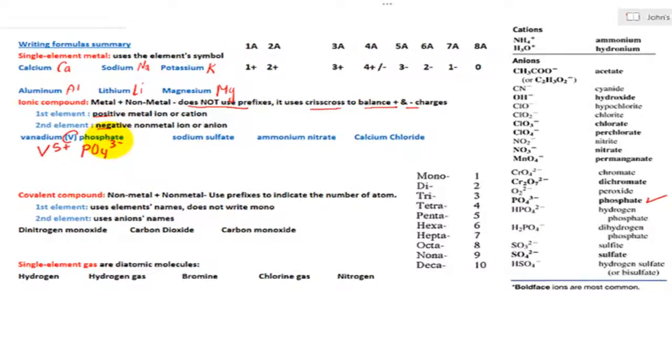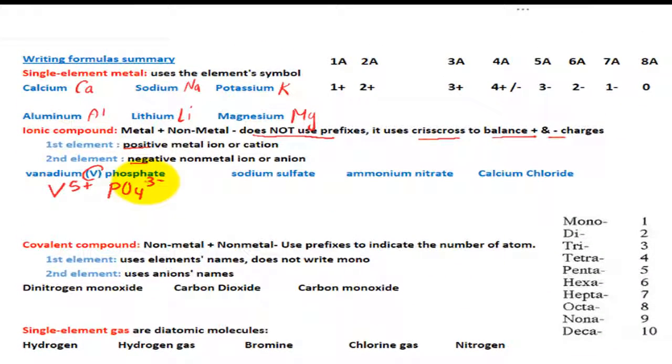Now, to balance out the charge, we are going to criss-cross and carry the number only. So criss-cross numbers only. In this case, we criss-cross and carry down the 3. That 3 represents the R3 vanadium. So we have V3.